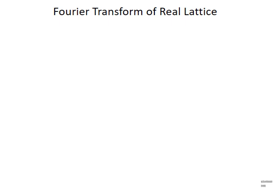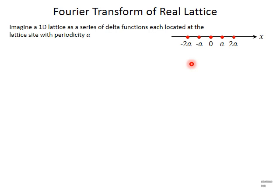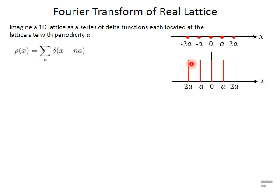The reciprocal space is a Fourier transform of a real space. Imagine you have a one-dimensional lattice with lattice points separated by a fixed separation A. We can define a one-dimensional function which mimics such a lattice, such that that function consists of a series of delta functions, with a delta function located at each lattice point in this one-dimensional system. This function, where n represents the location of the delta function, is an analogous system to this one-dimensional lattice.